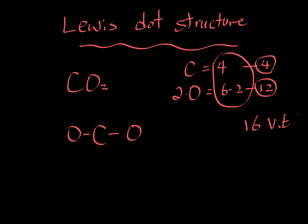We have 12 electrons to work with. Let's saturate everywhere with electrons to complete the octet rule. Around oxygen on the left, we have two, four, six, eight — because one bond represents two electrons and bonds are shared, so you count them for the carbon too. Carbon has two, four, six, eight as well. Oxygen on the right also has two, four, six, eight — everyone's happy. But counting all electrons gives us 20, which is more than the 16 valence electrons we're allowed.